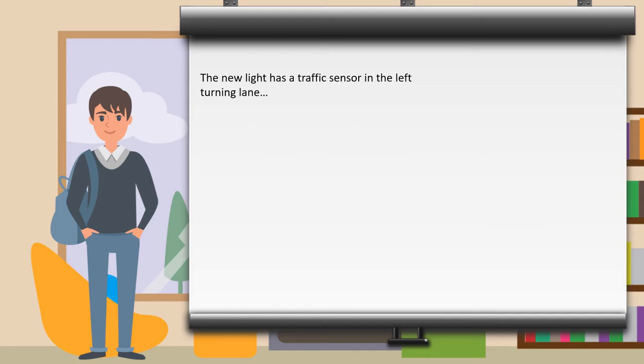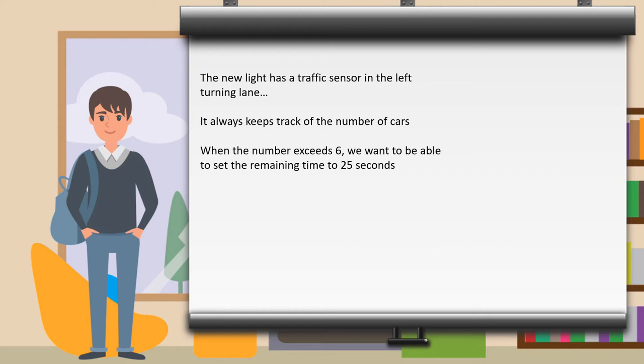The new light has a traffic sensor. It keeps track of the number of cars. When the number of cars exceeds 6, we want to be able to set the remaining time to 25 seconds.